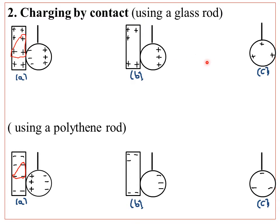The expected observation is that the suspended ball is attracted by the polythene rod, because the polythene rod is negatively charged but the sphere is positively charged — unlike charges always attract each other. However, if the ball is tested with a positively charged glass rod, they repel, because like charges always repel each other.